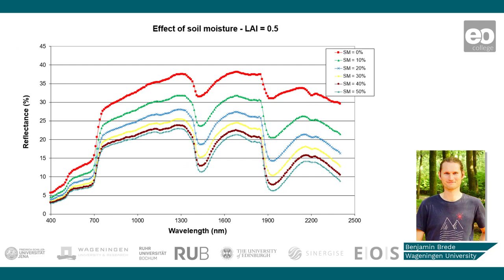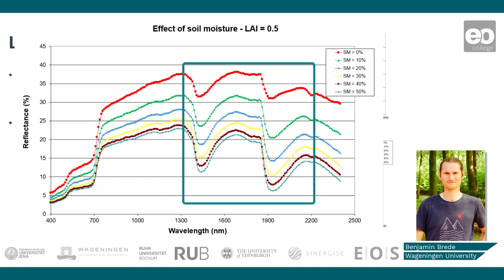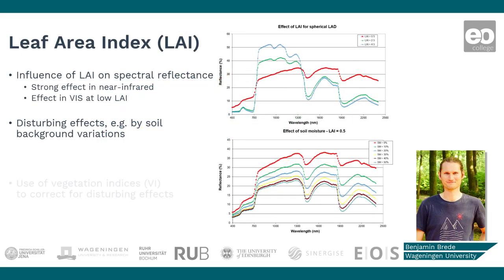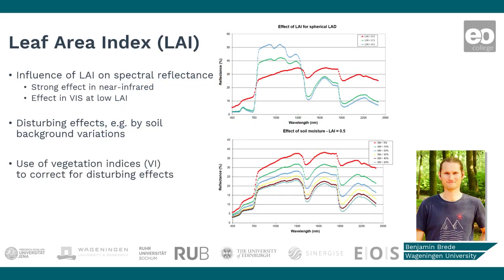You see a decrease in reflectance across most of the spectral domains, and especially in the short-wave infrared, resulting from increased absorption of radiation by soil water. Vegetation indices are mostly simple functions of two or three spectral bands designed to correct for disturbing influences, for instance the soil background.